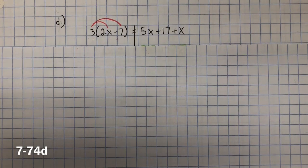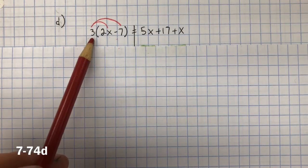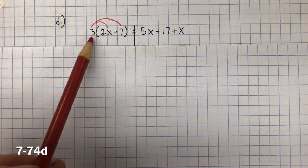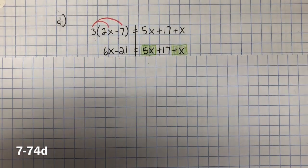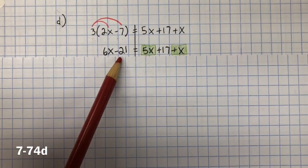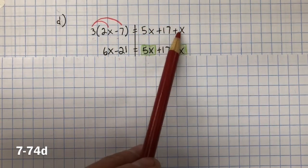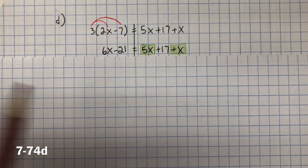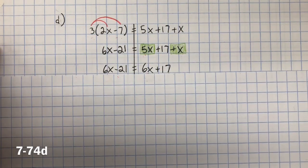In problem 7-74D, you first need to use distributive property. You need to distribute this 3 to both terms inside the parentheses. 3 multiplied by 2x equals 6x. 3 multiplied by negative 7 is negative 21. Now on the right side, there was no distributing to do, but you can see that you have like terms. So you need to combine the like terms. 5x plus x equals 6x.